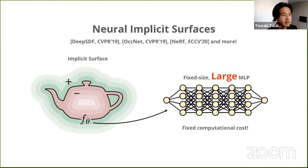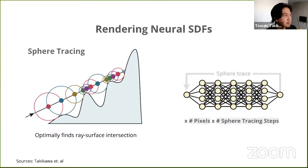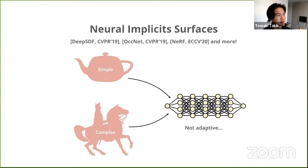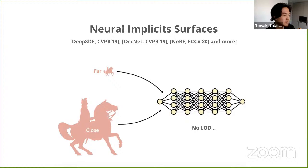The problem with these previous works is that they often use a very large MLP with millions of parameters to fit these functions. This is a huge problem because signed distance functions are rendered using sphere tracing, which for a given ray repeatedly queries along that ray to find the ray-surface intersection. The computational budget required to render a single image requires running the SDF query times the number of pixels times the number of sphere tracing steps — which can be in the hundreds — quickly becoming infeasible to render at any reasonable rate. Also, these previous works are not adaptive: whether you have a simple or complex shape, you use the same fixed-budget MLP, and there's no notion of LOD.